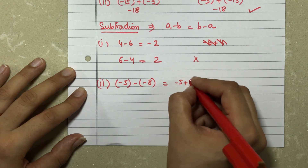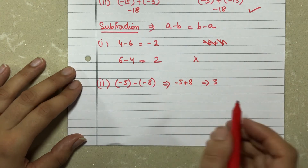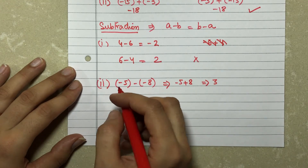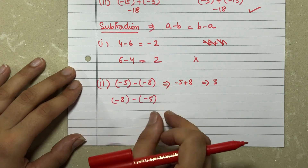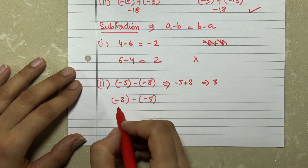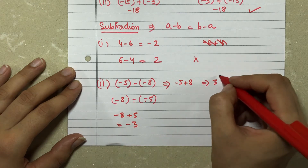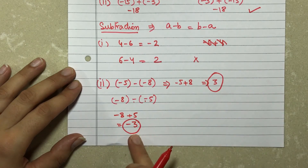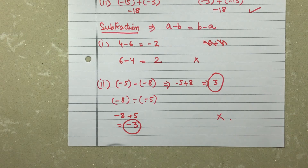Let's look at a second example: minus 5 minus 8. This gives minus 5 plus 8, which equals 3. Now if I switch their positions, it becomes minus 8 minus minus 5, which is minus 8 plus 5, giving minus 3. Here it is 3, and here it is minus 3 — they are not the same. Therefore, commutative property does not stand true in the case of subtraction.